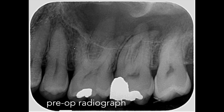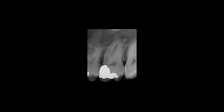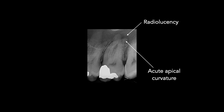Here you can see the pre-operative radiograph of the maxillary left second molar. The tooth had been symptomatic and the patient presented with toothache. On the radiograph you can see a periapical radiolucency, indicating that the tooth is highly likely to be necrotic and the root canals undoubtedly infected. At the tip of the distobuccal root there appears to be an abrupt curvature, and we need to bear this in mind when preparing the root canals.